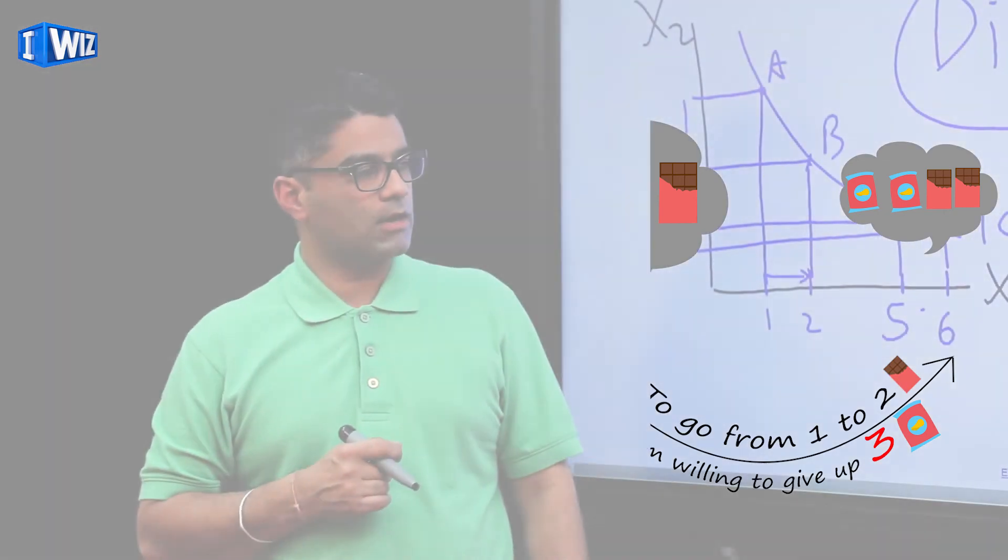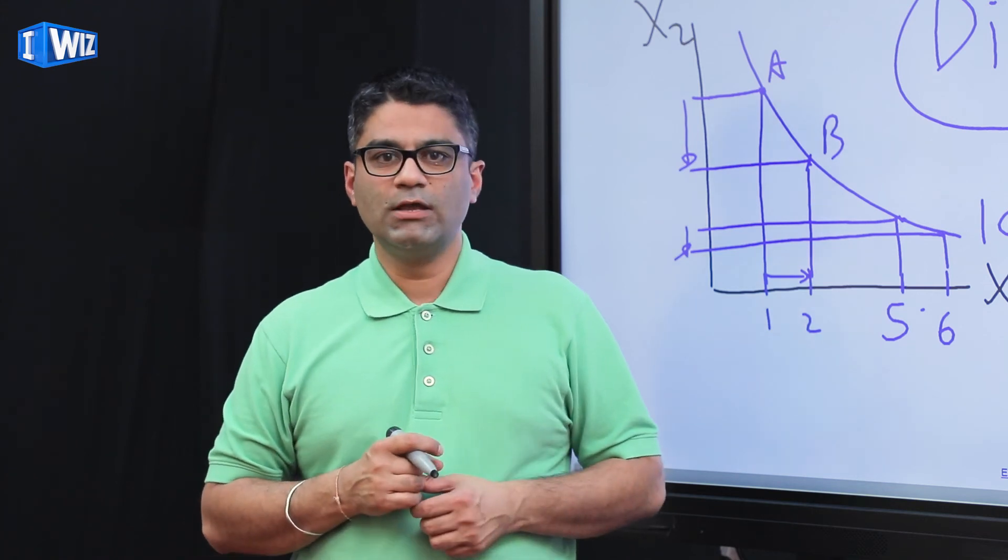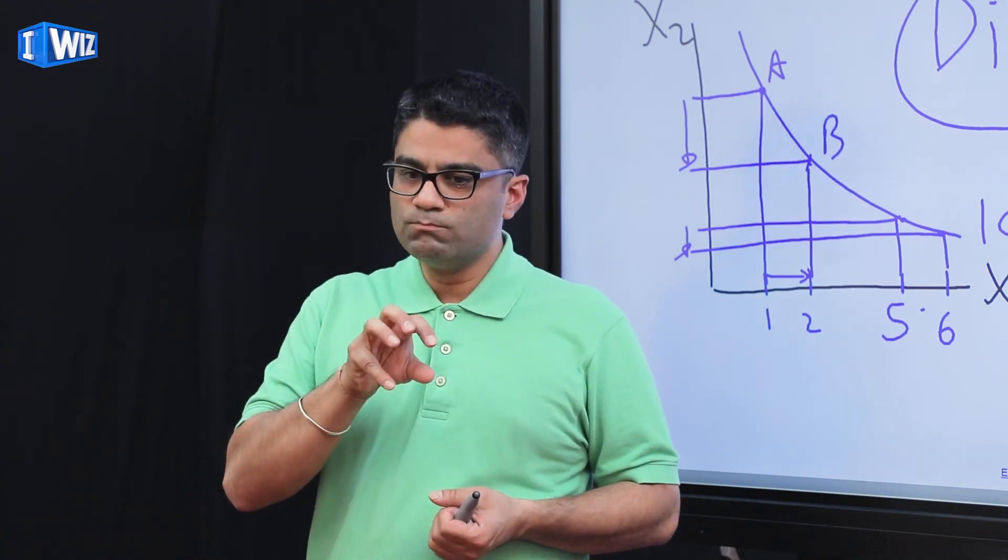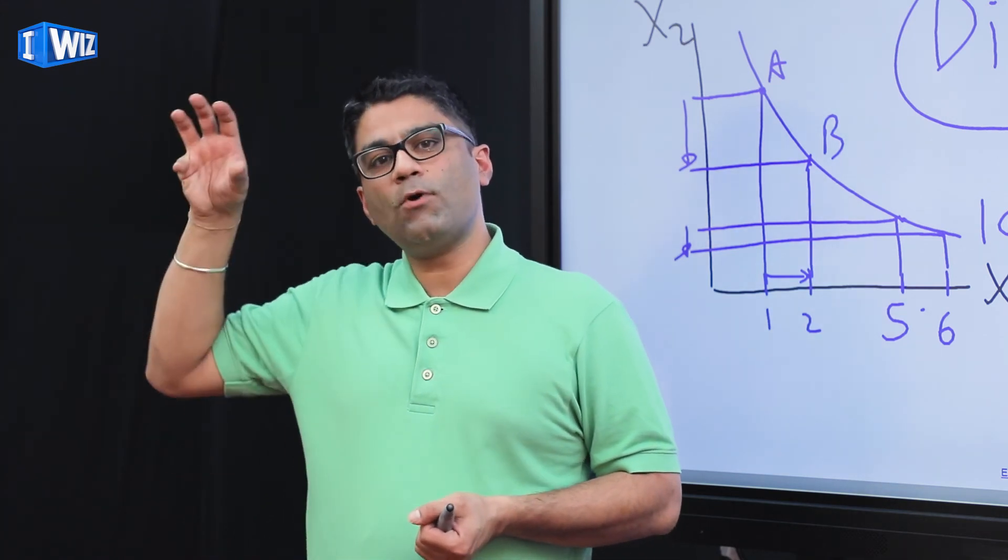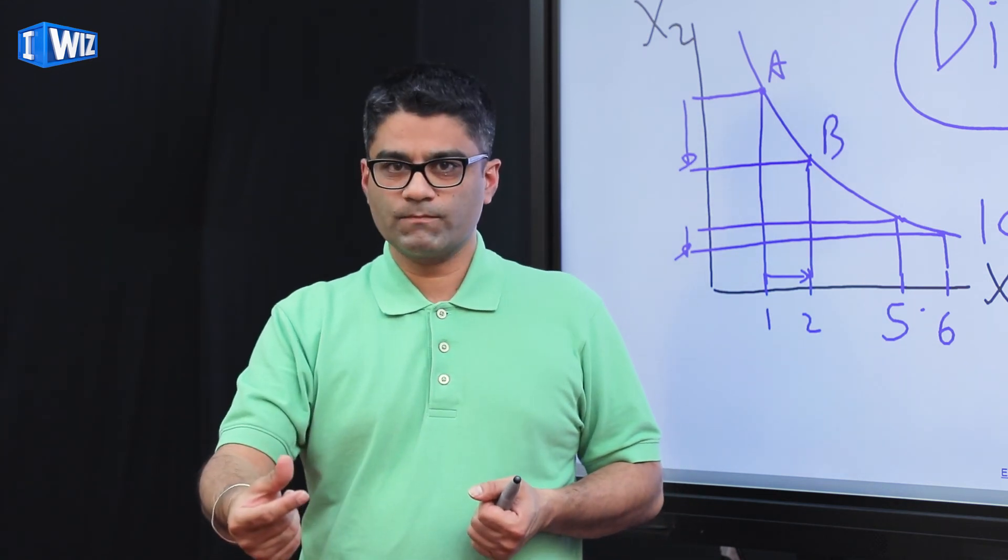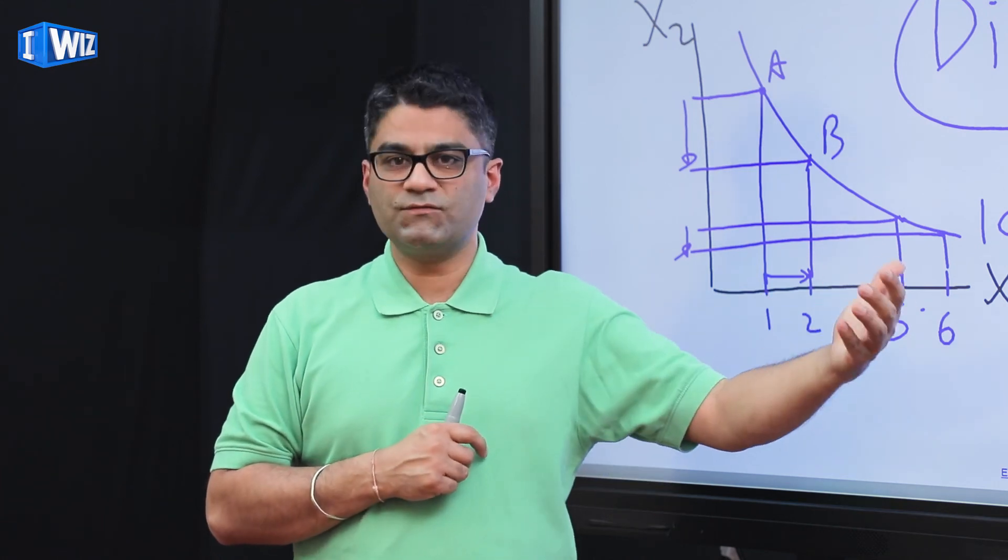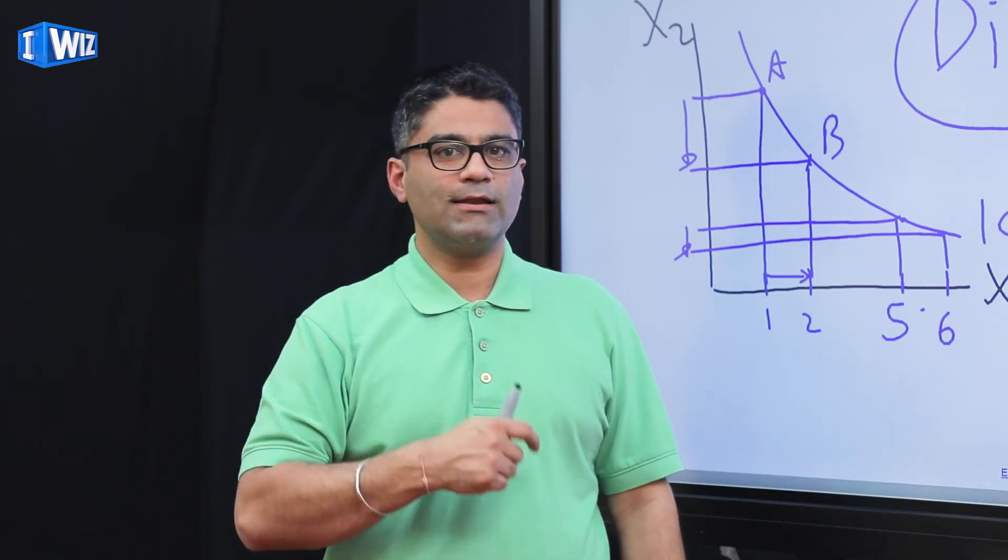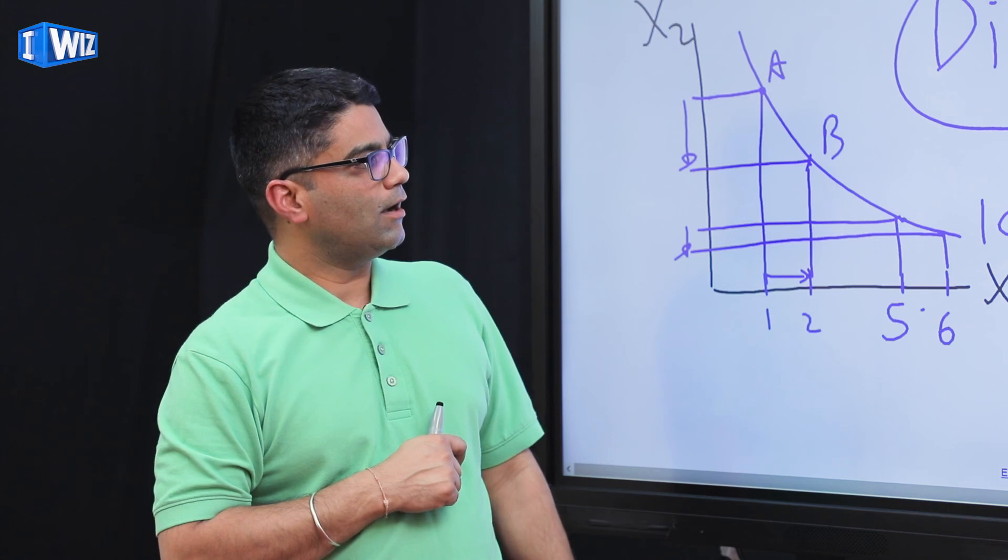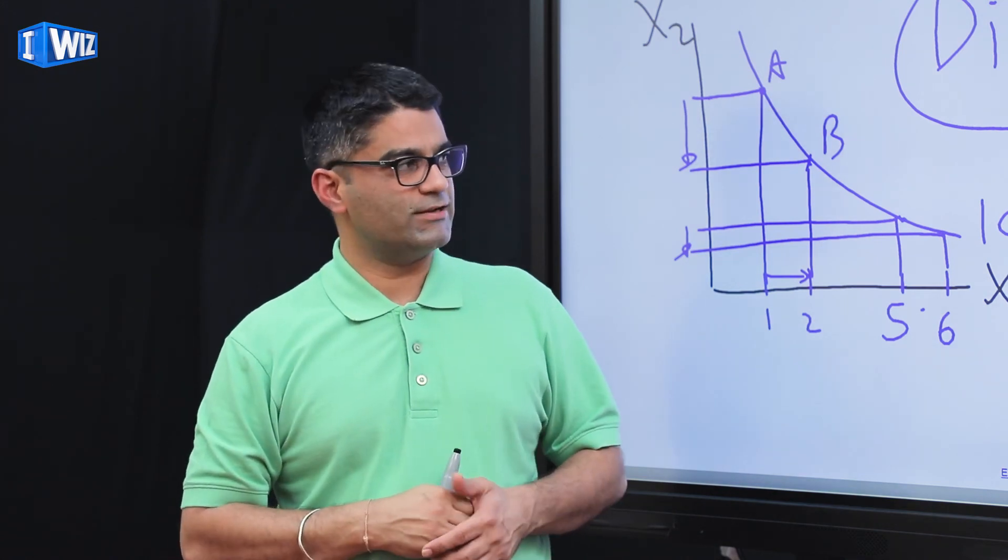So next time you go to the market and you're buying those goods, think about how much more are you willing to give up of the other good to get one more unit of x1. So you're paying for chocolates, not with money, but with number of chips you're giving up. Think about that and hopefully all of this will make sense when you're trying to learn this for your exams.